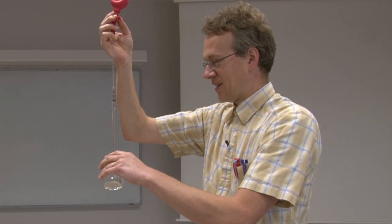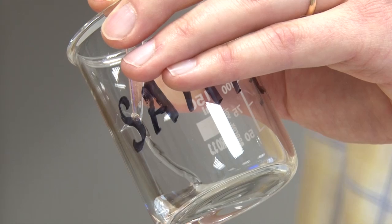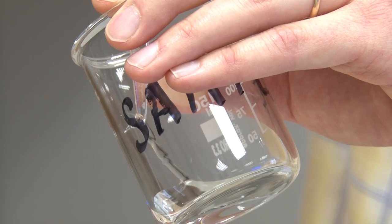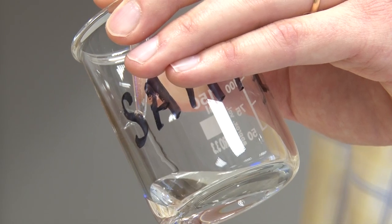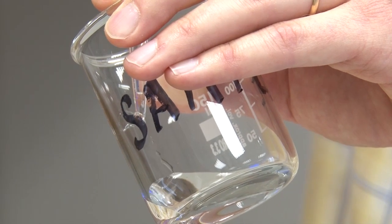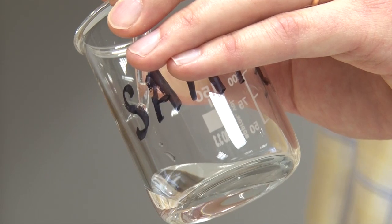And again it is important to keep the pipet vertically. And also as you can see I'm holding the pipet tip against the wall of the beaker. And after all the liquid has been pipetted, I wait for five seconds before removing the pipet.